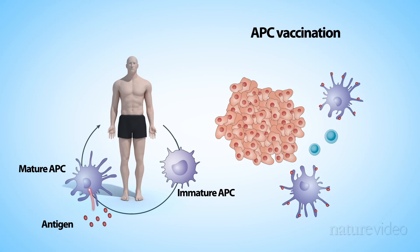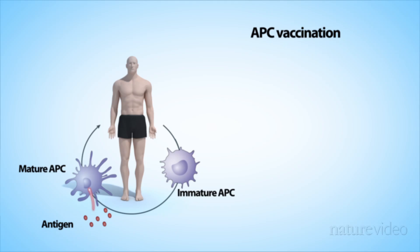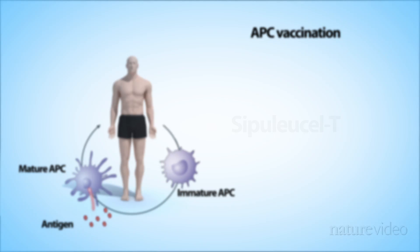The first vaccine of this type received FDA approval in 2010 for the treatment of some prostate cancers. It's known as Provenge or Sipuleucel-T. The other vaccination approaches are still experimental.